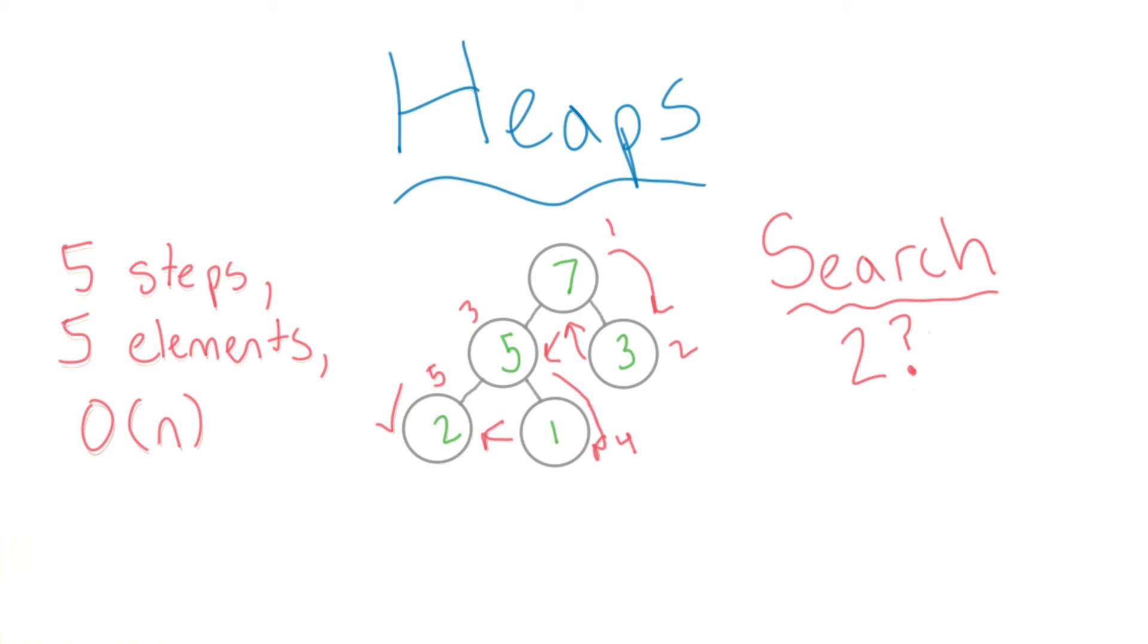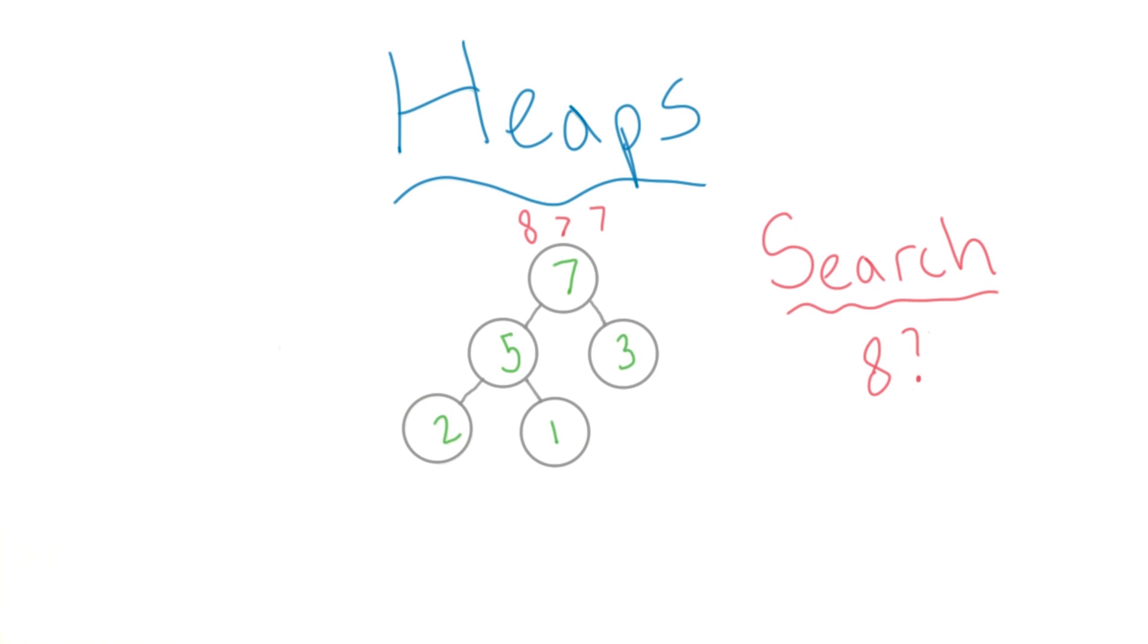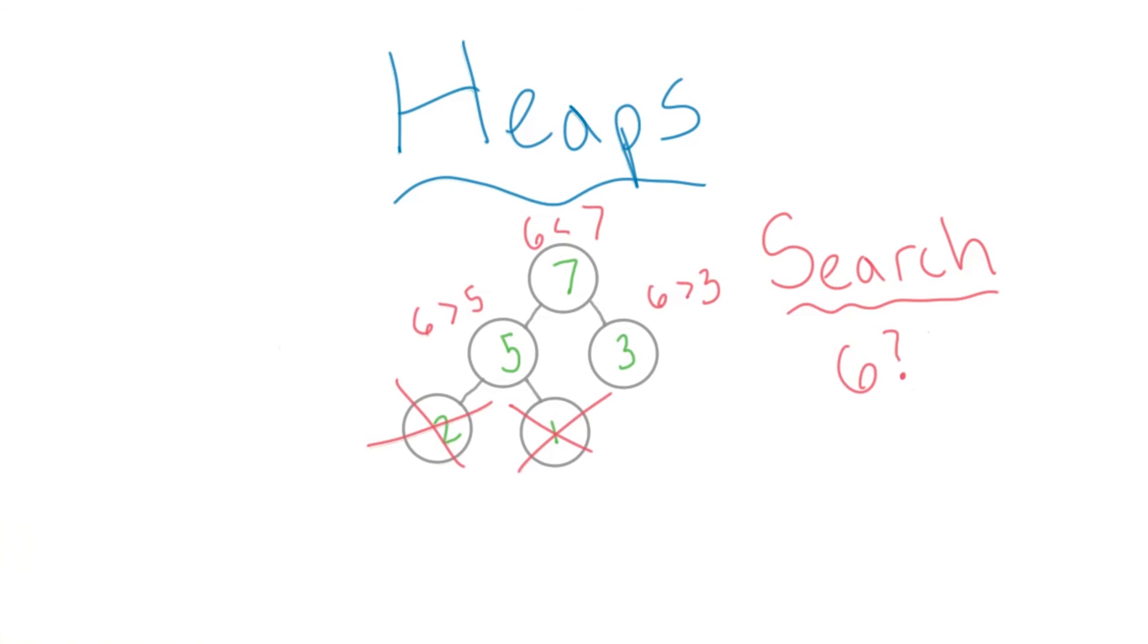One thing to note is that we can actually use the max heap properties to our advantage in a search. For example, we can quit our search immediately if the element we're searching for is bigger than the root. In general, if our node value is bigger than the one we're comparing to, we don't need to check anything in its subtree, since we know that it's the biggest.